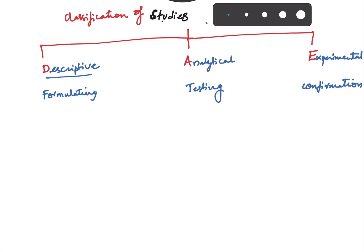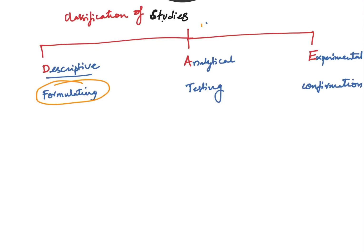To summarize clearly: the main aspect of descriptive studies is formulating the hypothesis, the main aspect of analytical studies is testing that formulated hypothesis, and the main aspect of experimental studies is confirming the tested hypothesis. These three are related — formulating, testing, and confirmation. We will now discuss each individual subtype.